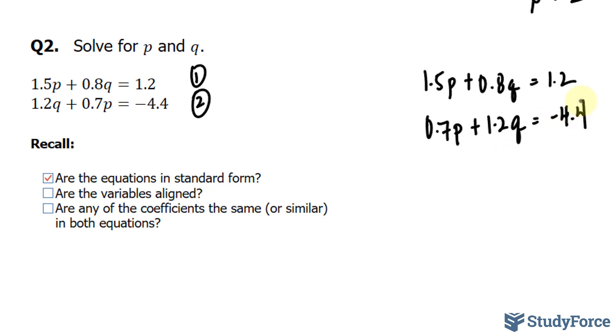And the bottom one becomes 0.7p plus 1.2q is equal to negative 4.4. So now they're in the right order, and we can go ahead and check that. And finally, are any of the coefficients the same or similar in both equations? And by a visual check, clearly that's not the case. So when that happens, you can actually decide which variable to eliminate, p or q.